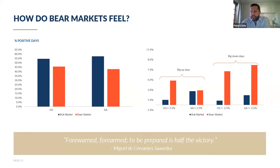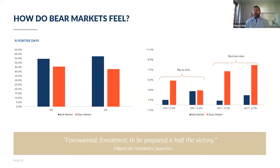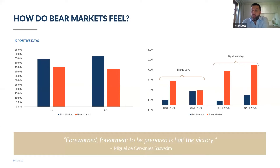Not so much the case in South Africa — those next bars on the right show that South African markets don't tend to experience as high a frequency of big up days in bear markets relative to bull markets. On the right-hand side of the chart, the big down days — moves of more than two and a half percent down — in both US and SA markets are, as expected, much more prevalent during bear markets.